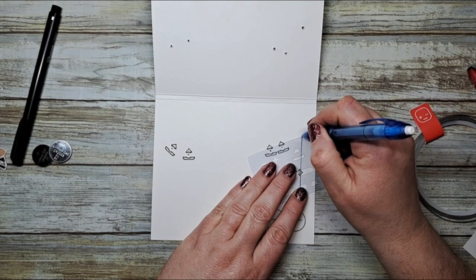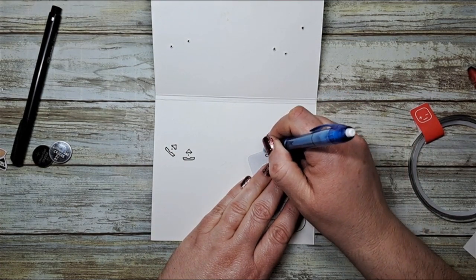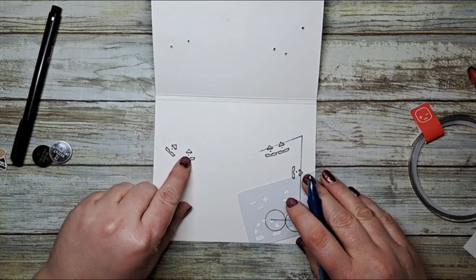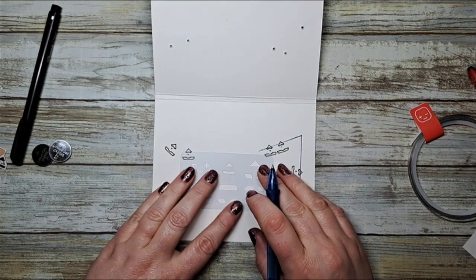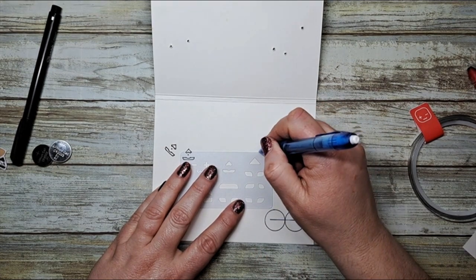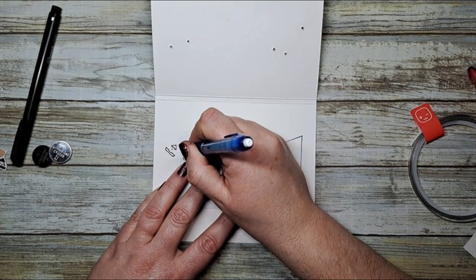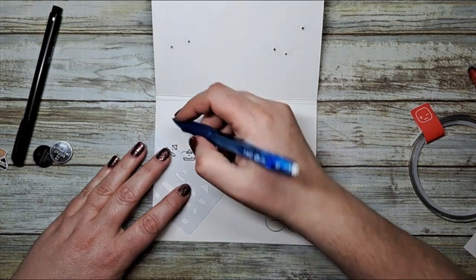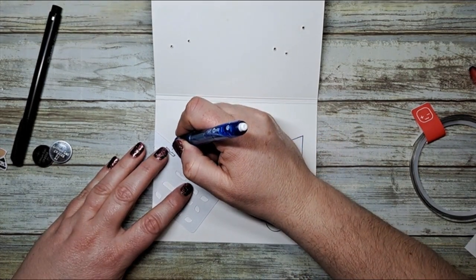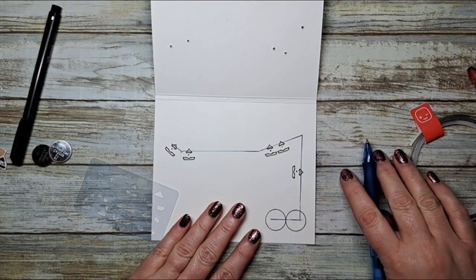So we're going to go across these two little fellows right here and then we're going to take it across to our other stickers on the other side. And it's really as simple as this. Take that circuit up across our final fifth sticker. There we go. There's our negative line.